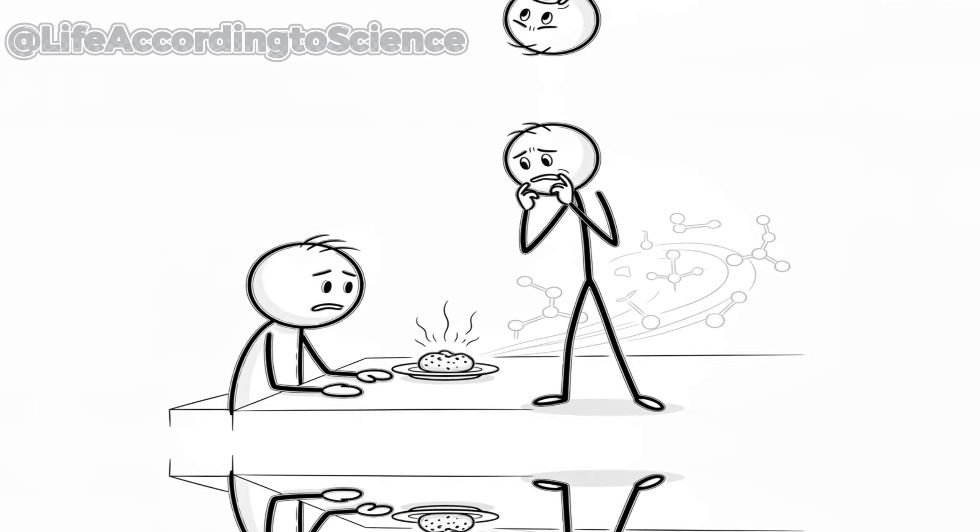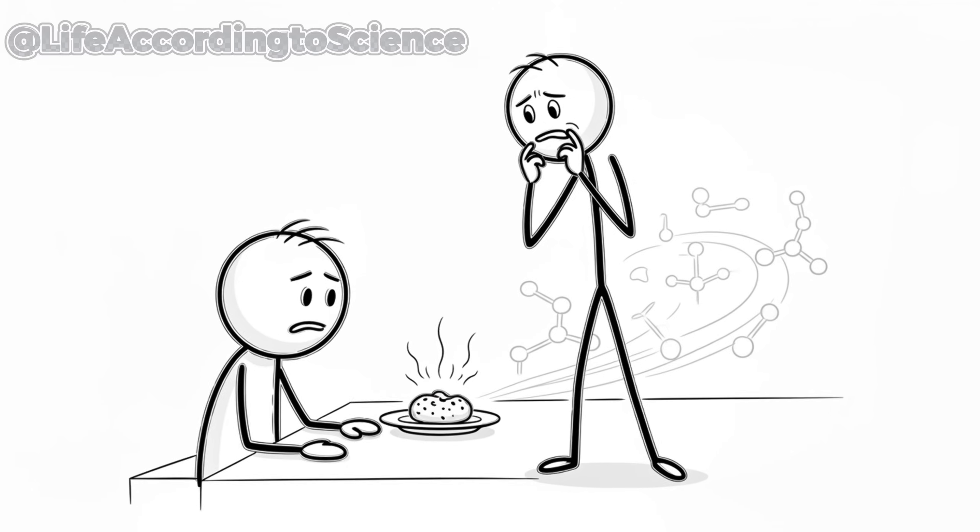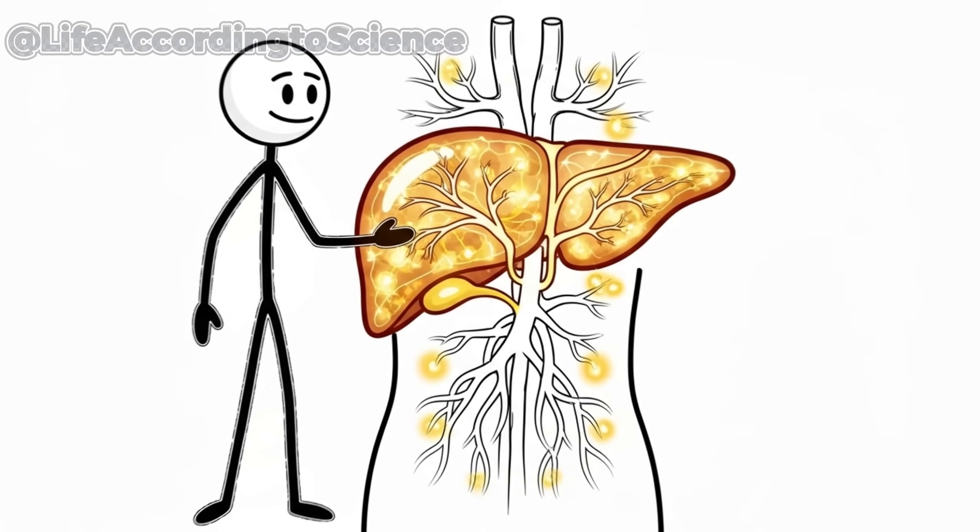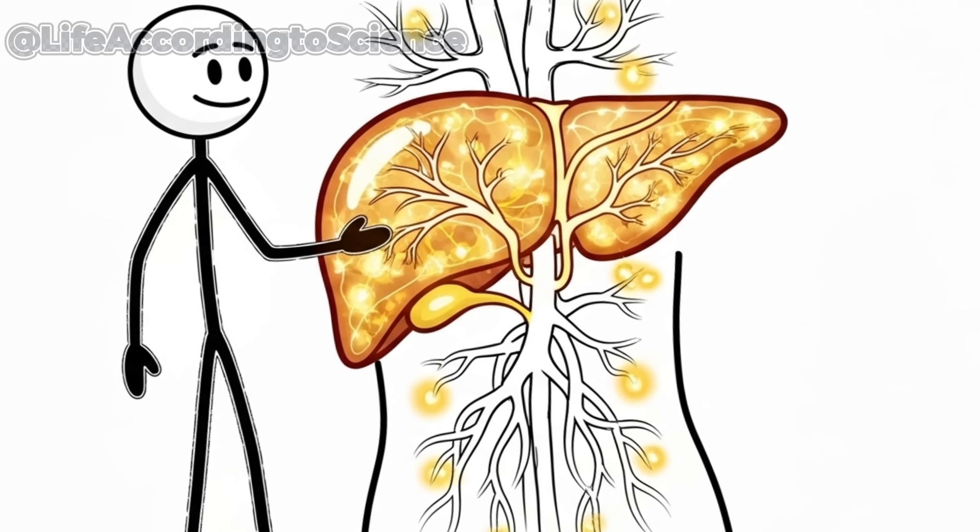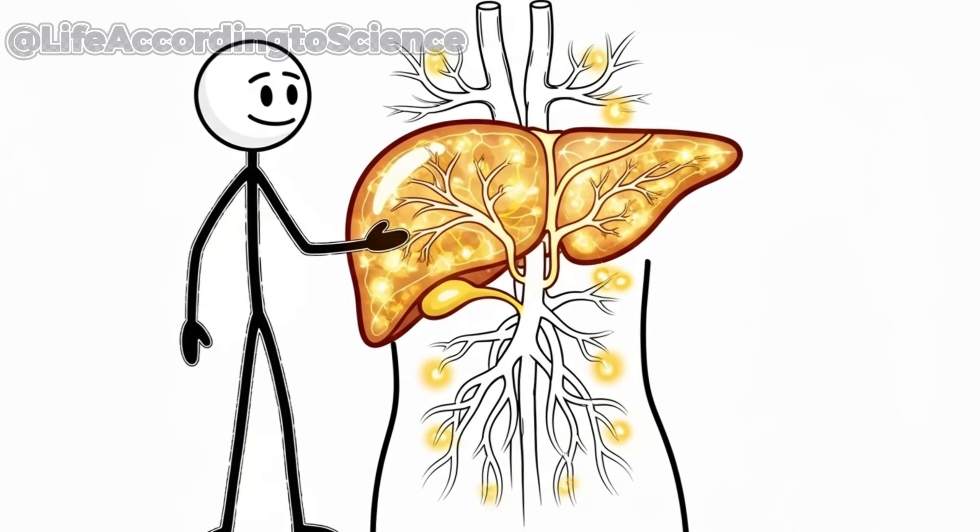Just one snack. But behind the scenes, your metabolism is shifting gears, preparing for survival mode. Your liver, the biochemical powerhouse, takes the lead. It starts breaking down glycogen to keep your blood sugar stable, releasing glucose drop by drop like a slow IV.